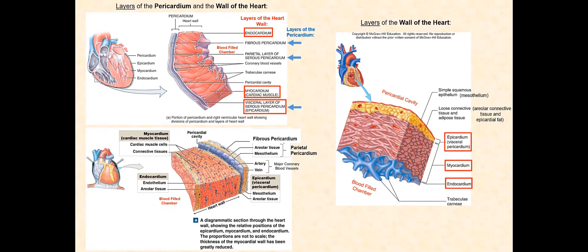I will not be going over this slide with you, so I'd like you to compare our drawing with these diagrams to review the layers of the pericardium and the layers of the wall of the heart. Remember that the pericardium consists of the fibrous pericardium, the parietal pericardium, and the visceral pericardium, which is also known as the epicardium. Take note of the tissues and structures found in these layers that was discussed in the last slide.